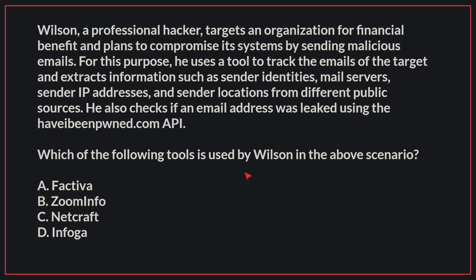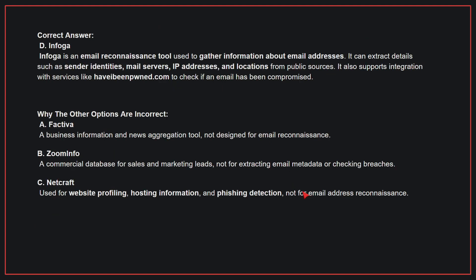Wilson, a professional hacker, targets an organization for financial benefit and plans to compromise its systems by sending malicious emails. He uses a tool to track emails of the target and extracts information such as sender identities, mail servers, sender IP addresses, and sender locations from different public sources. He also checks if an email address was leaked. The correct answer is D, Infoga. Infoga is an email reconnaissance tool used to gather information about email addresses, including sender identities, mail servers, IP addresses, and locations from public sources. It also supports integration with services like haveibeenpwned.com to check if an email has been compromised.